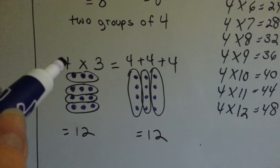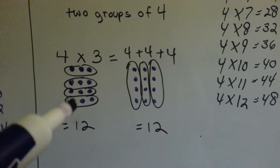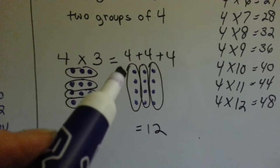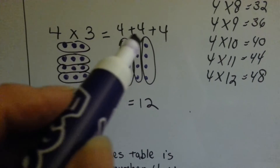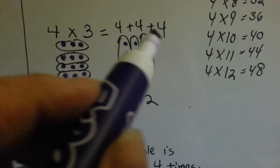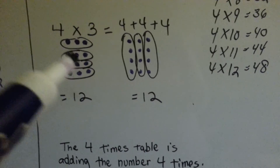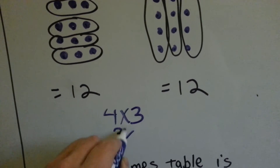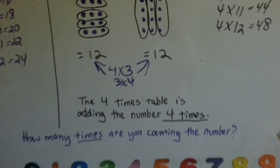Let's look at 4 times 3. There are 4 times that I made 3 dots in the oval — I did it 4 times: 1, 2, 3, 4. It's the same thing as 4 plus 4 plus 4. 4 times 3 means we had a 4 three times. You could also say we had a 3 four times. Either way, 4 times 3 or 3 times 4 still equals 12. That's the commutative property.